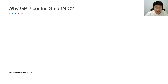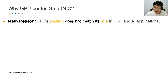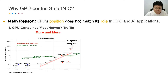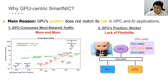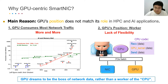Why GPU-centric smart NIC? The main reason is that GPU's position doesn't match its role in HPC and AI applications. On one hand, GPU consumes most network traffic and these applications have larger and larger data sizes. On the other hand, GPU's position in the server is just a worker of its boss CPU. The CPU manipulates both NIC and GPU, and such an architecture doesn't allow fine-grained co-processing between NIC and GPU. Therefore, we believe that GPU dreams to be the boss of network data rather than just a worker of the current boss CPU.